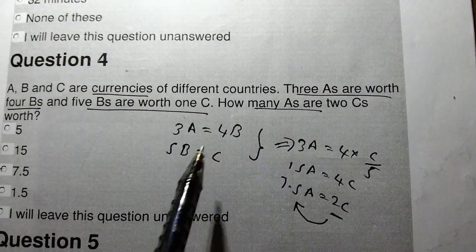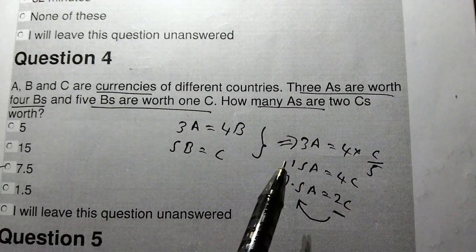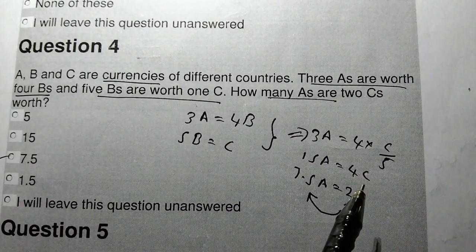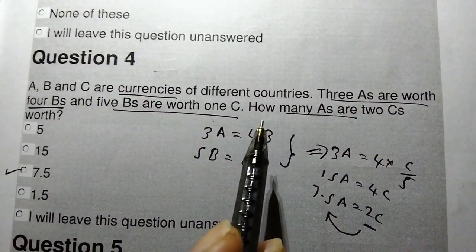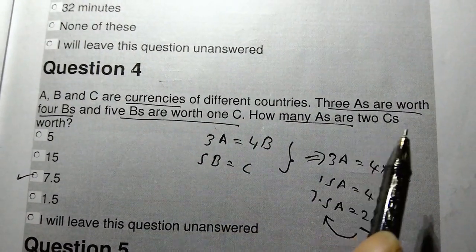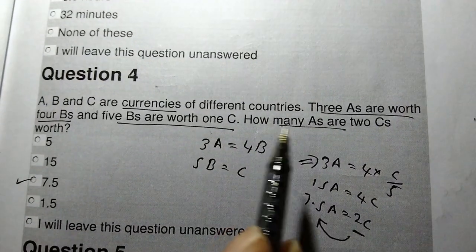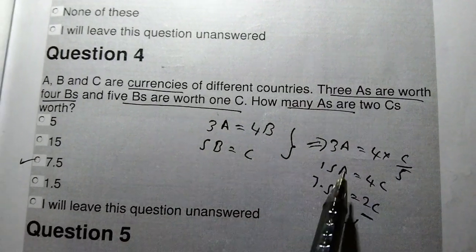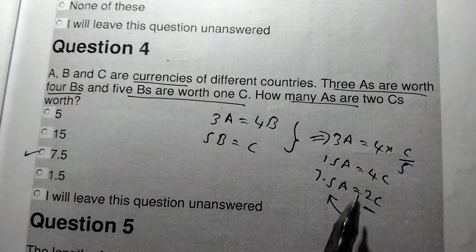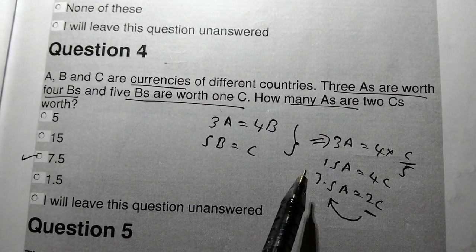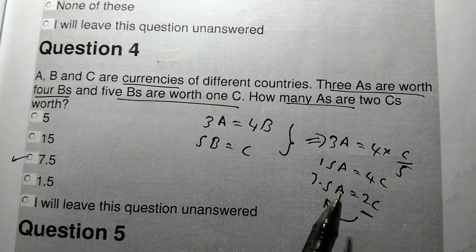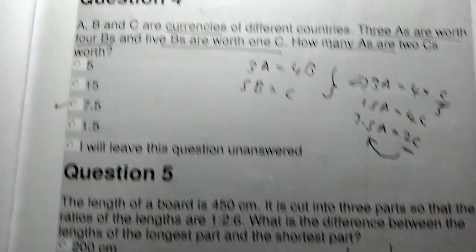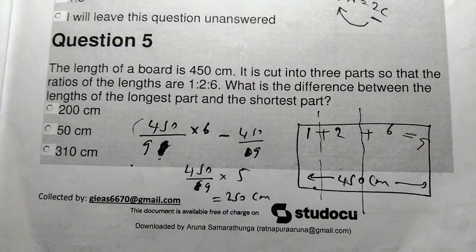To solve, eliminate B since you need A and C. You can find the relationship between A and C. Looking at two C's carefully, if you substitute two C's, it will become 7.5 A's. So the answer is 7.5.